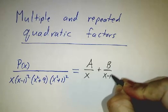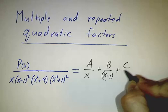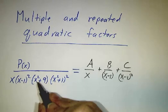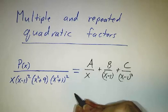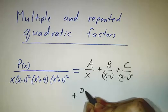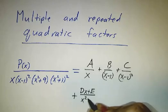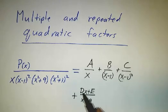We have 1 power of x squared plus 9, so we have something over x squared plus 9, and that something has a linear and a constant piece.